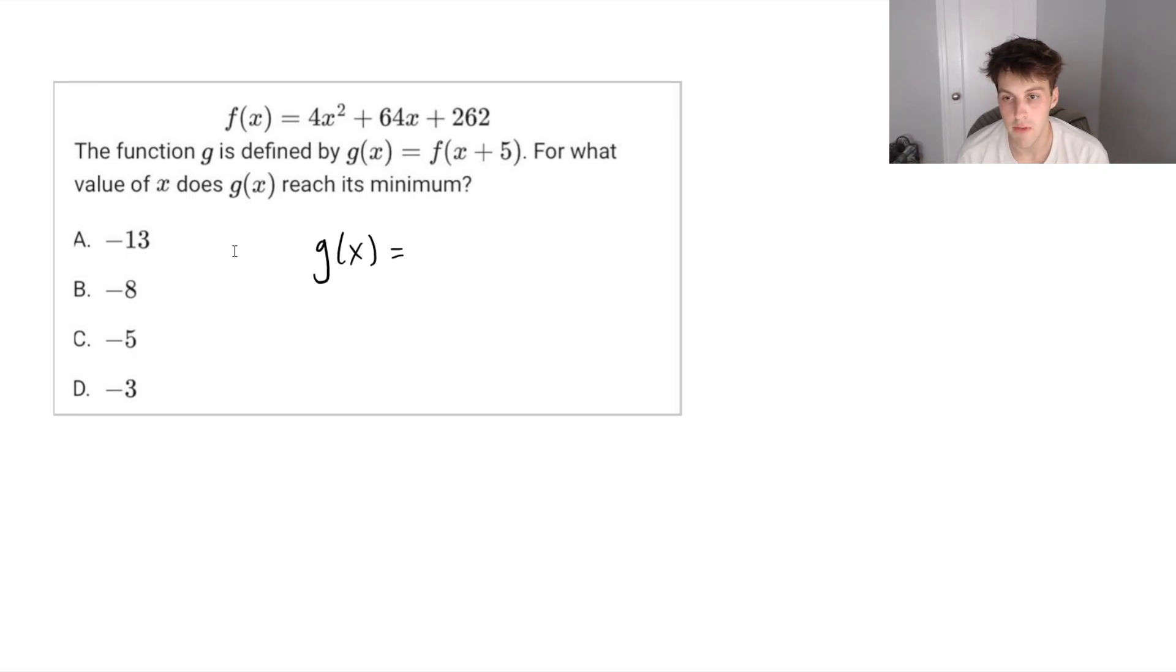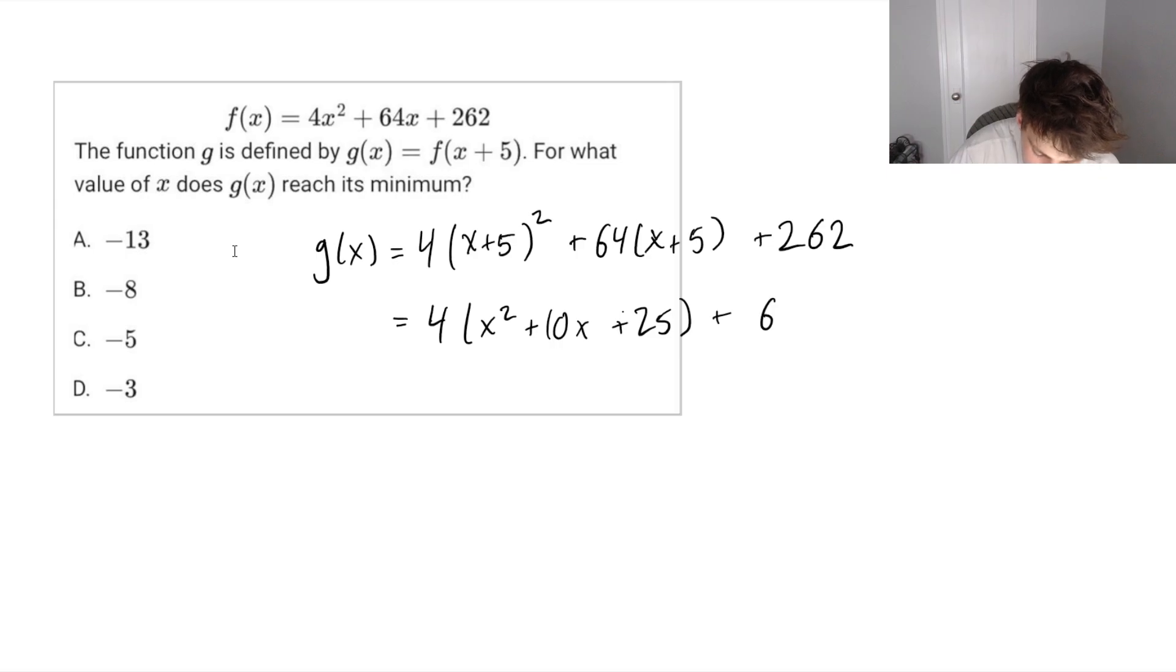So when we have f of x plus 5, we're shifting our x values to the left by 5. Which is the same thing as substituting all of our x values from f of x as x plus 5. Plus 64 times x plus 5. Plus 262. We can expand this and simplify.